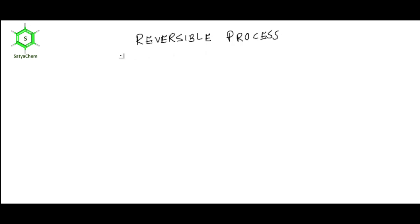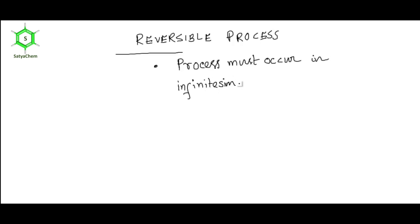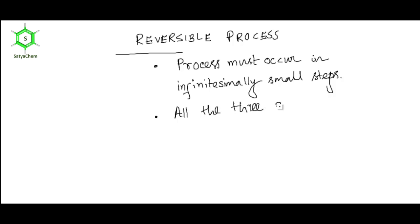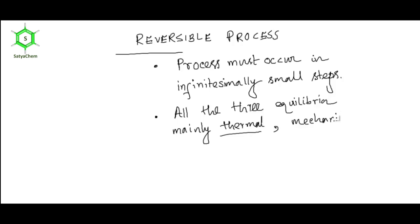Let's start with Reversible Process. A process will be termed as reversible provided it follows the following conditions. First condition: the process must occur in infinitesimally small steps. Second condition: all three equilibria — thermal equilibrium, mechanical equilibrium, and chemical equilibrium — are to be maintained simultaneously.